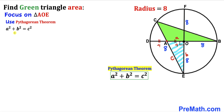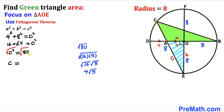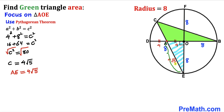Filling in the Pythagorean formula: a is 4, so 4² + 8² = C². Simplifying: 16 + 64 = C², so C² = 80. Taking the square root, C = √80 = 4√5 units. Therefore AE turns out to be 4√5.